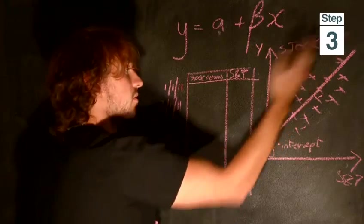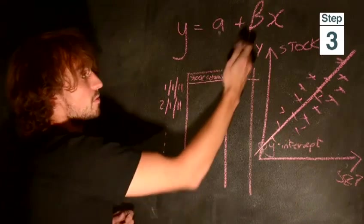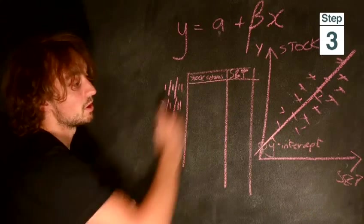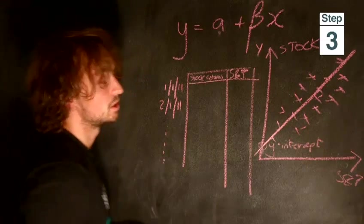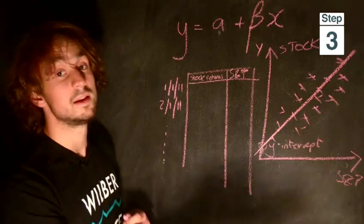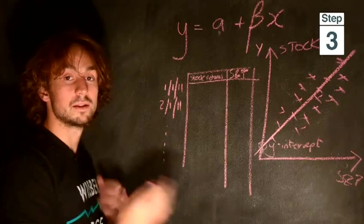So in this case, we have a positive correlation with the S&P. So you have a positive beta. If the line was to look like this, you'd have a negative correlation. So when the S&P has a great day, your stock would do badly and vice versa.